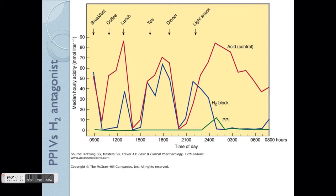Let's go through this graph, which explains the differences between PPI and H2 antagonists. Looking at the red line first — the normal control — the acidity reduces slightly upon breakfast because the food dilutes it, but then the body responds by secreting more acid, so it goes back up. After the meal it peaks and goes down again, and so on.